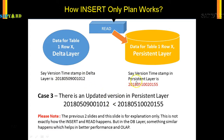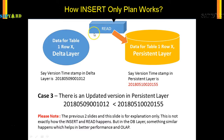In Case 3, the timestamp in the persistent layer is on the 10th of May, while the Delta layer has the 9th of May. The persistent layer has the most recent version, so a read statement for the same data will look at the latest timestamp and pick data from the persistent layer.